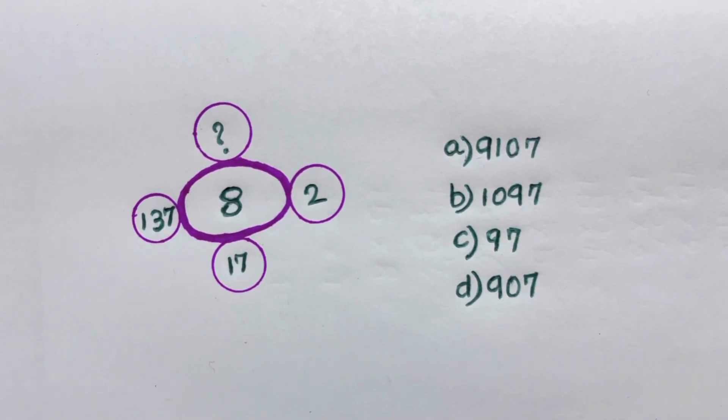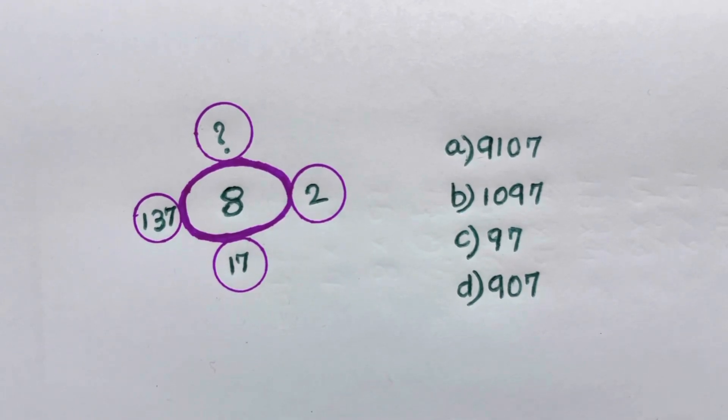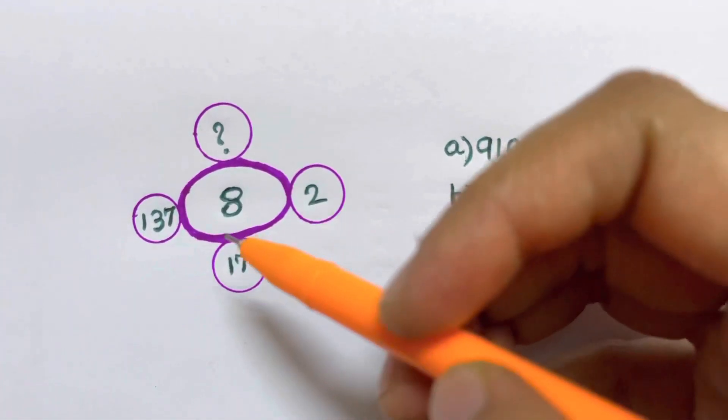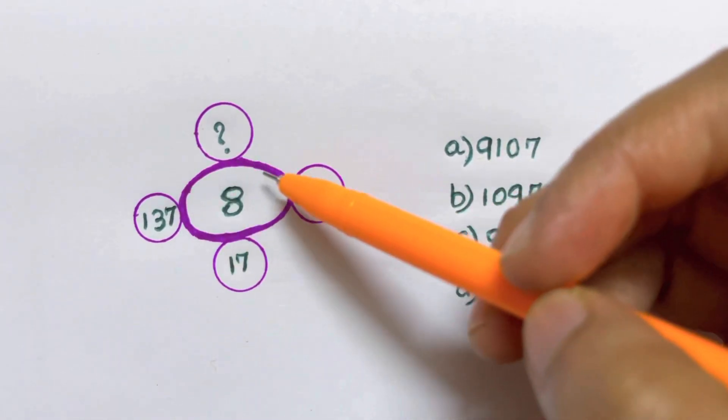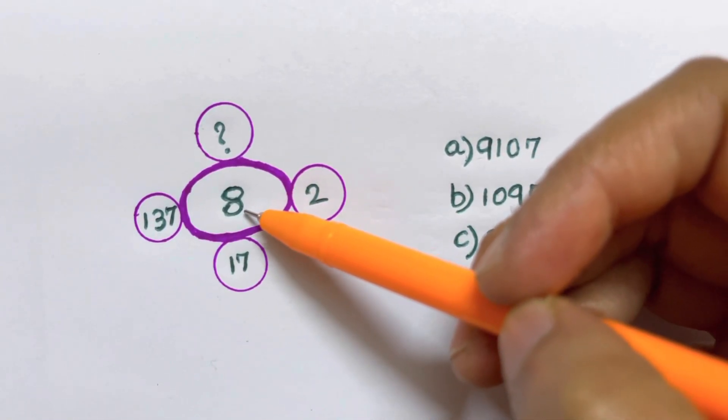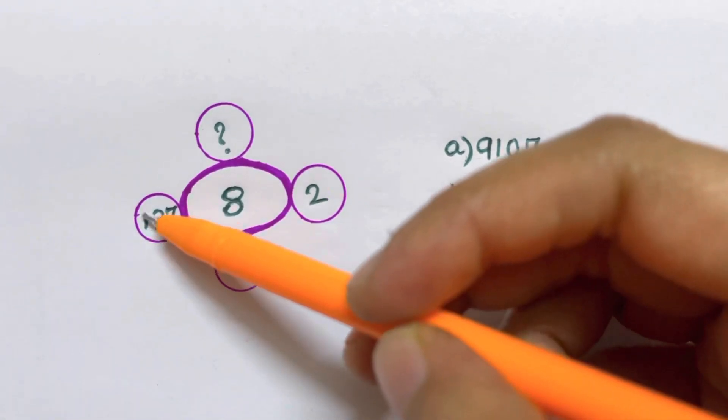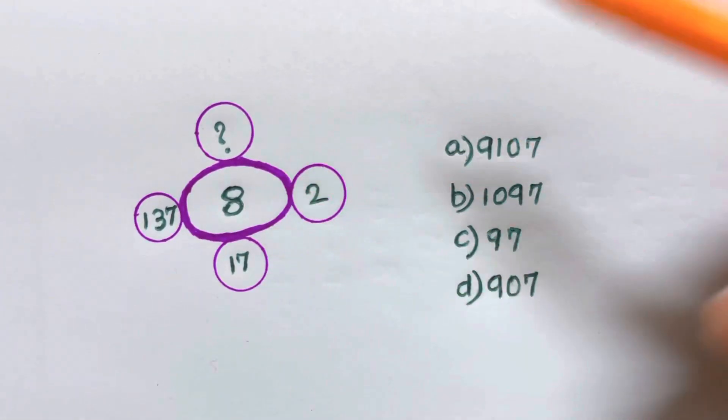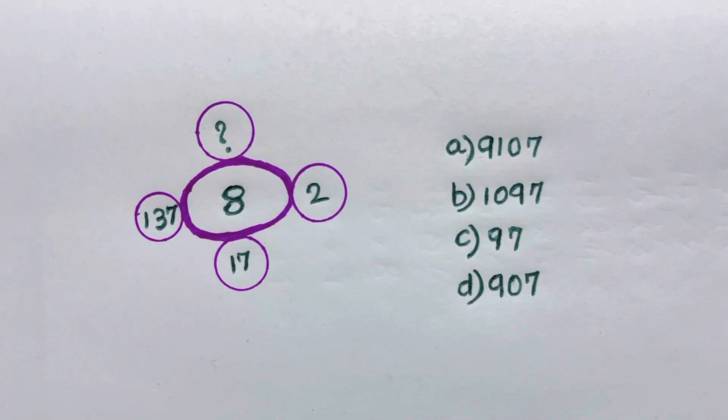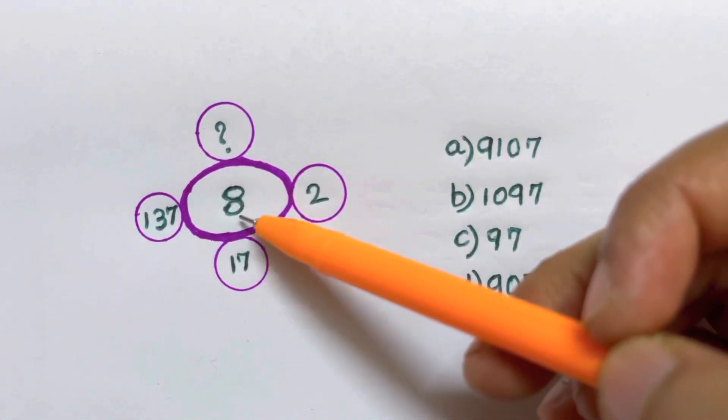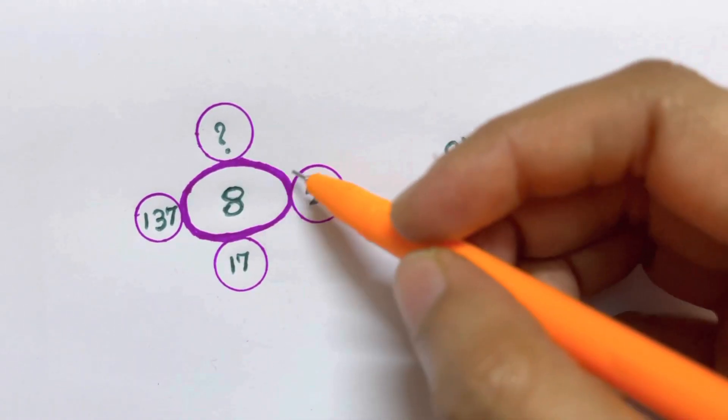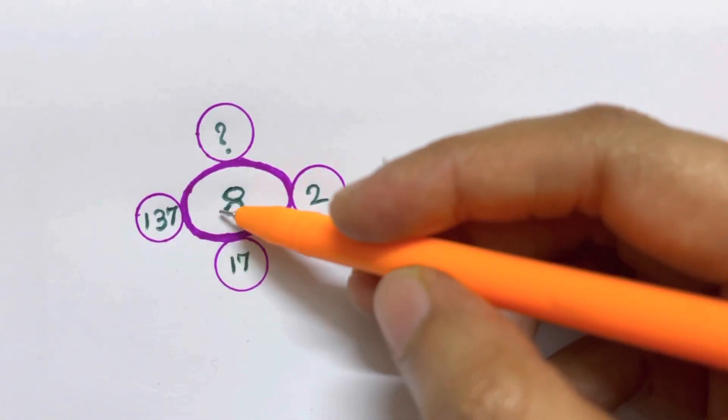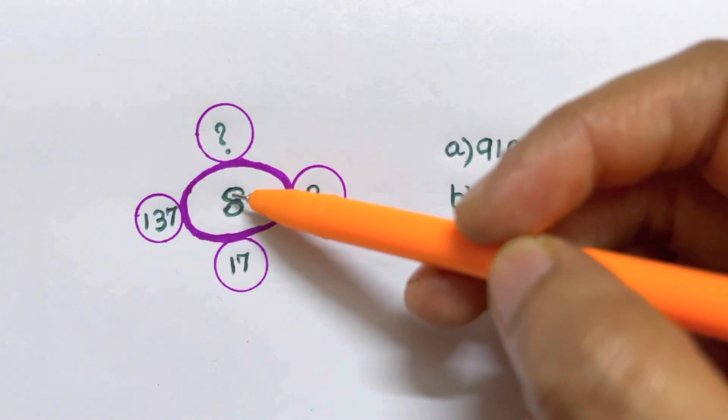So I'll show you the solution for this now. All you have to do is, there are three numbers: 2, 17, and 137, and there's a number in the middle, that's 8. So all the numbers are connected to 8 in some or the other manner. Let us see how 2 is connected with 8, how 17 is connected with 8, and how 137 is connected with 8.